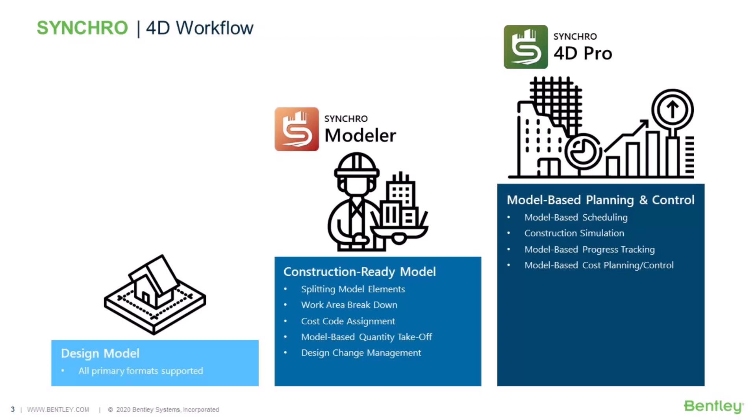More specifically, with Modeler, you'll be able to split the model elements based on your chosen means and methods, create work areas, assign cost codes, perform model-based quantity takeoff, and manage design changes. Once you're done with all these tasks, you can switch to 4D Pro, where you'll be able to perform a wide variety of model-based project planning and control.